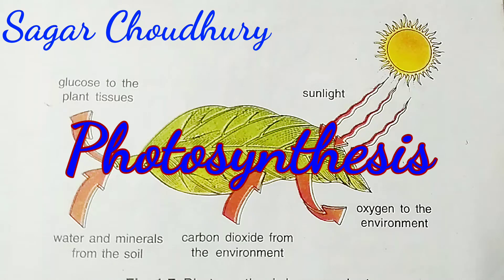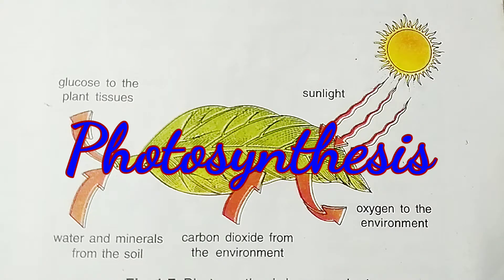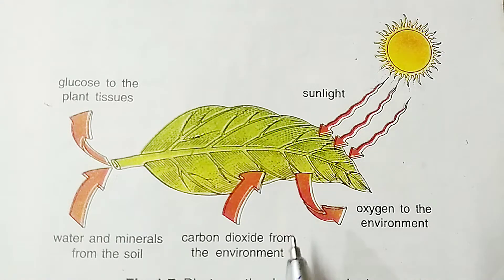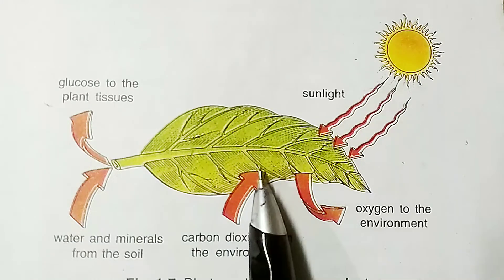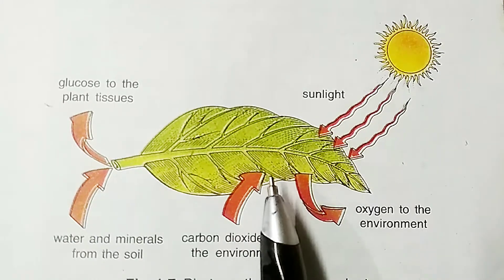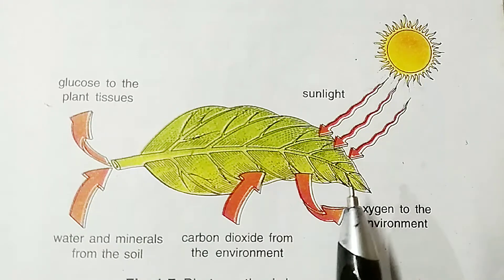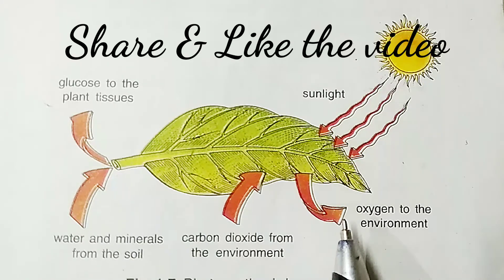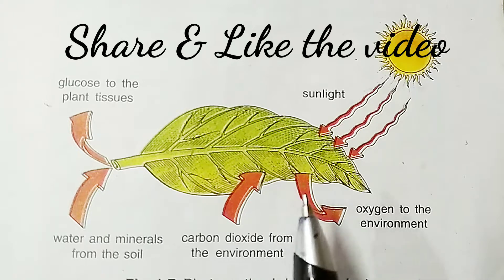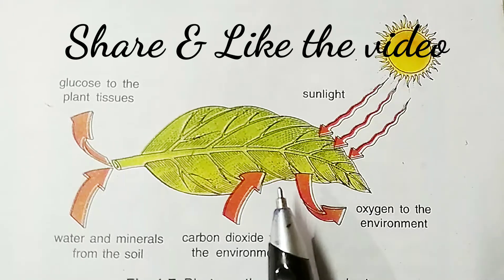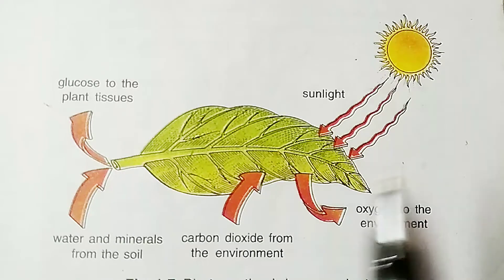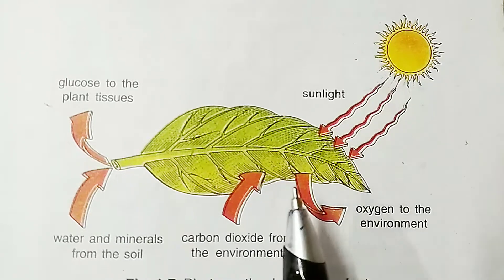Now what is photosynthesis? In simple terms, it's a process by which plants manufacture their food. Definition wise, photosynthesis is a biochemical process by which plants, generally green plants, manufacture their own food using carbon dioxide and water as the raw material in the presence of sunlight. The oxygen that is released is a byproduct of photosynthesis. And remember, photosynthesis is the only process by which solar energy can be converted to chemical energy.